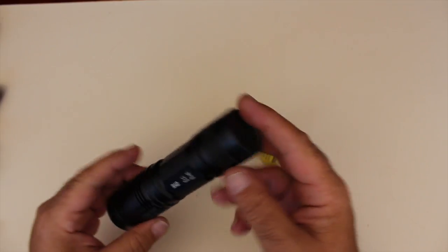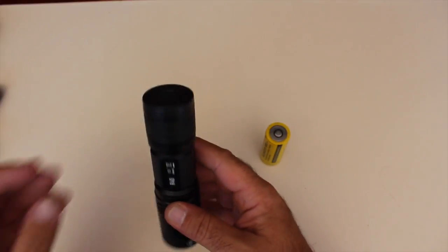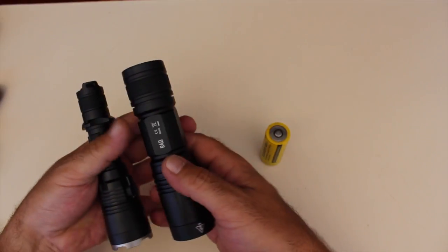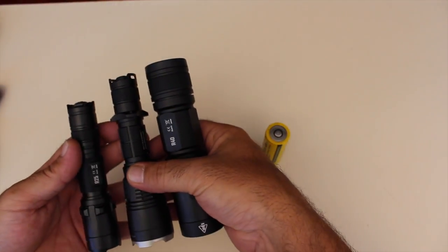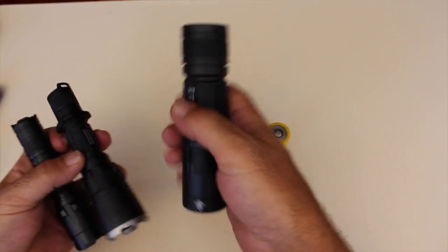Looking at the R40 in comparison in size to the MH27, length is about the same, and the R25, it's slightly bigger.